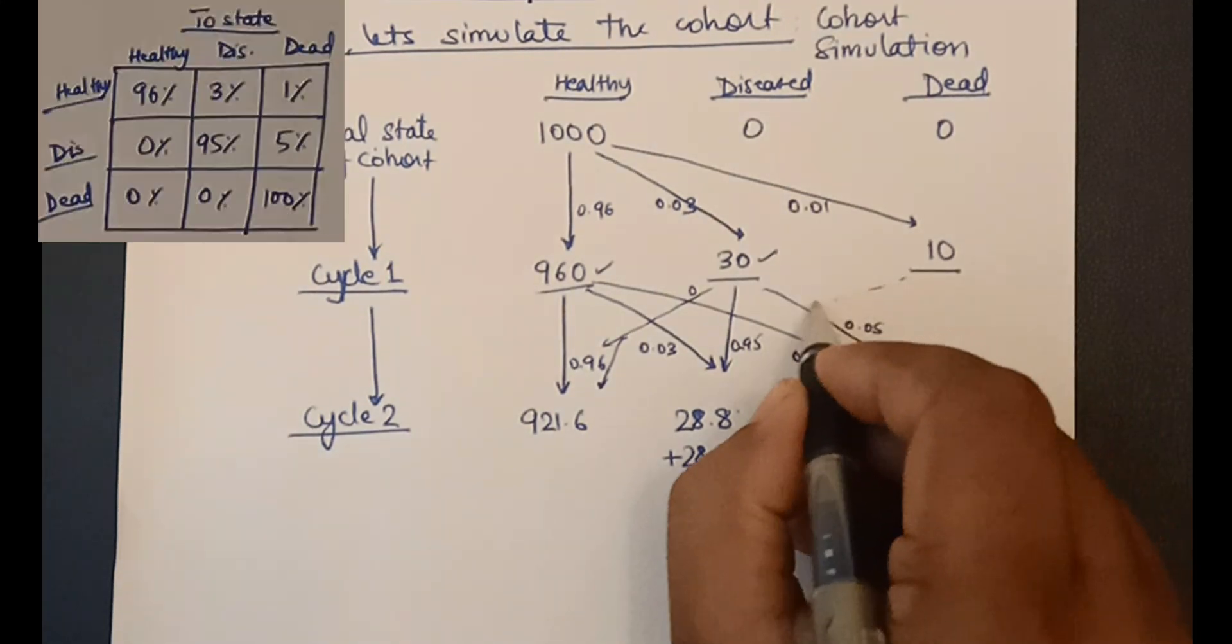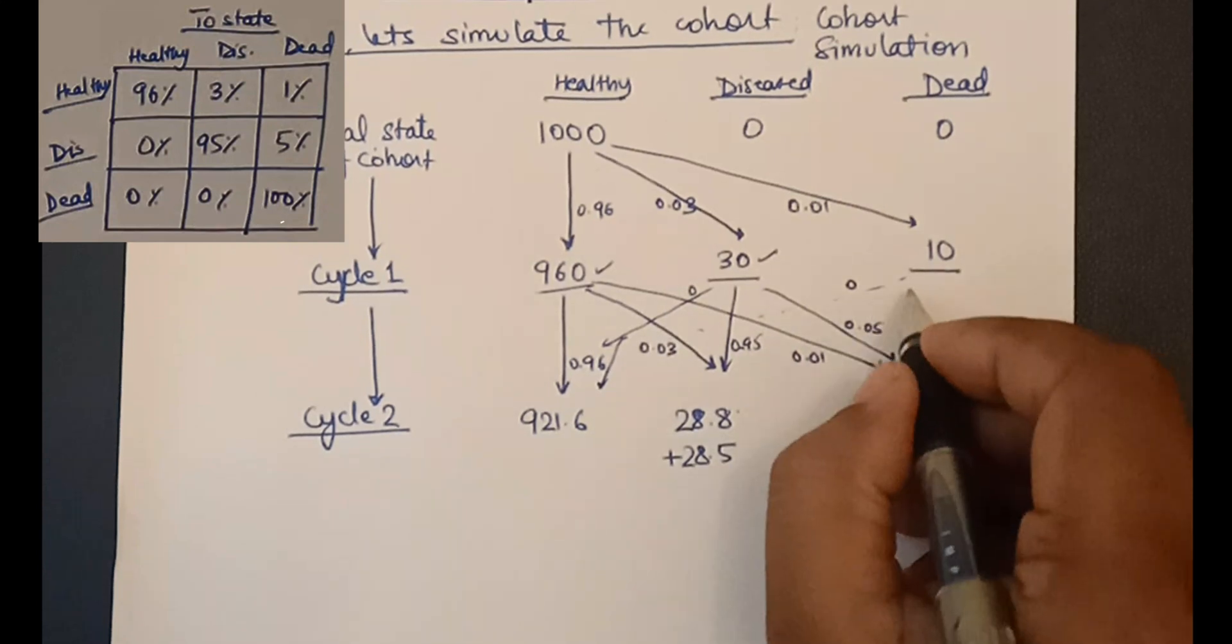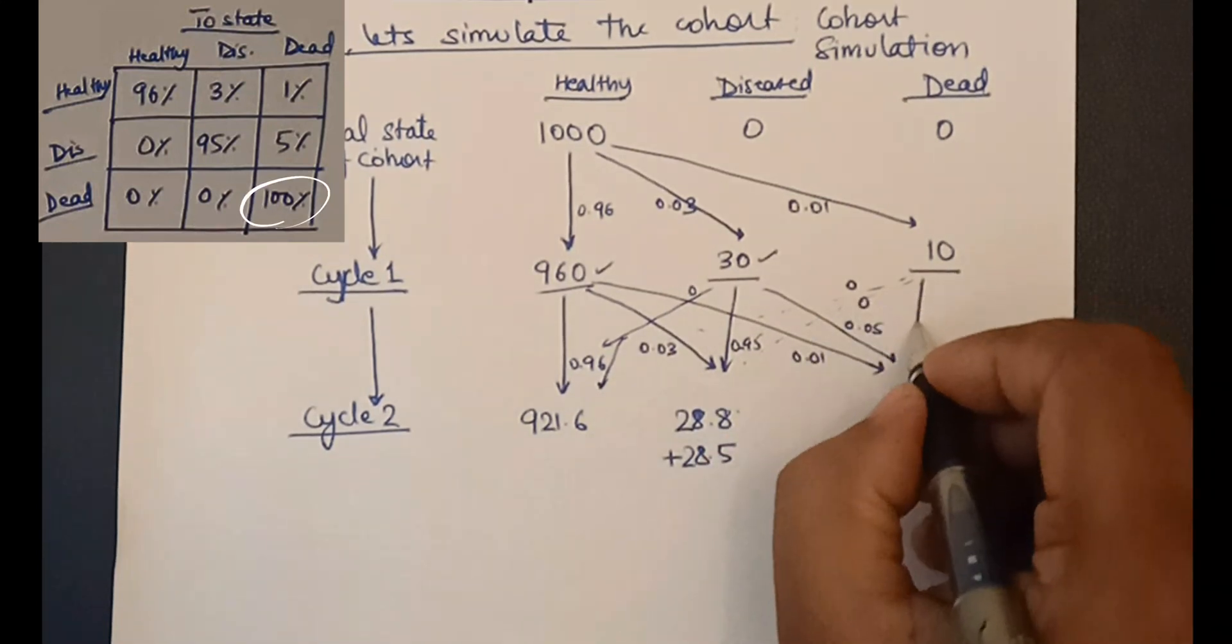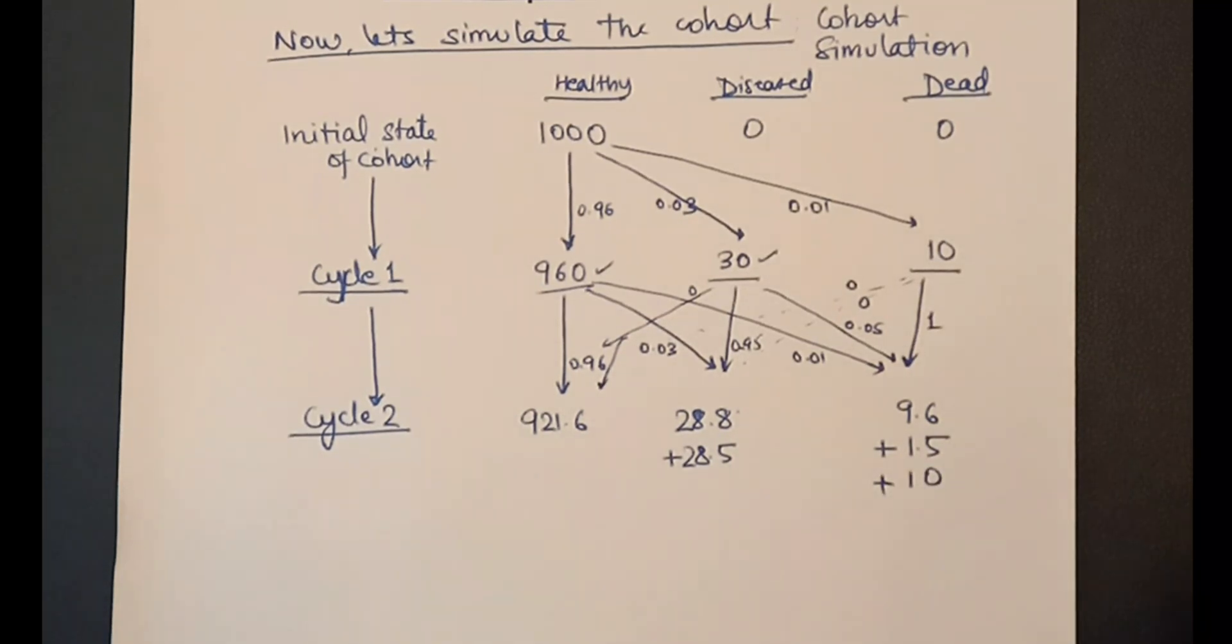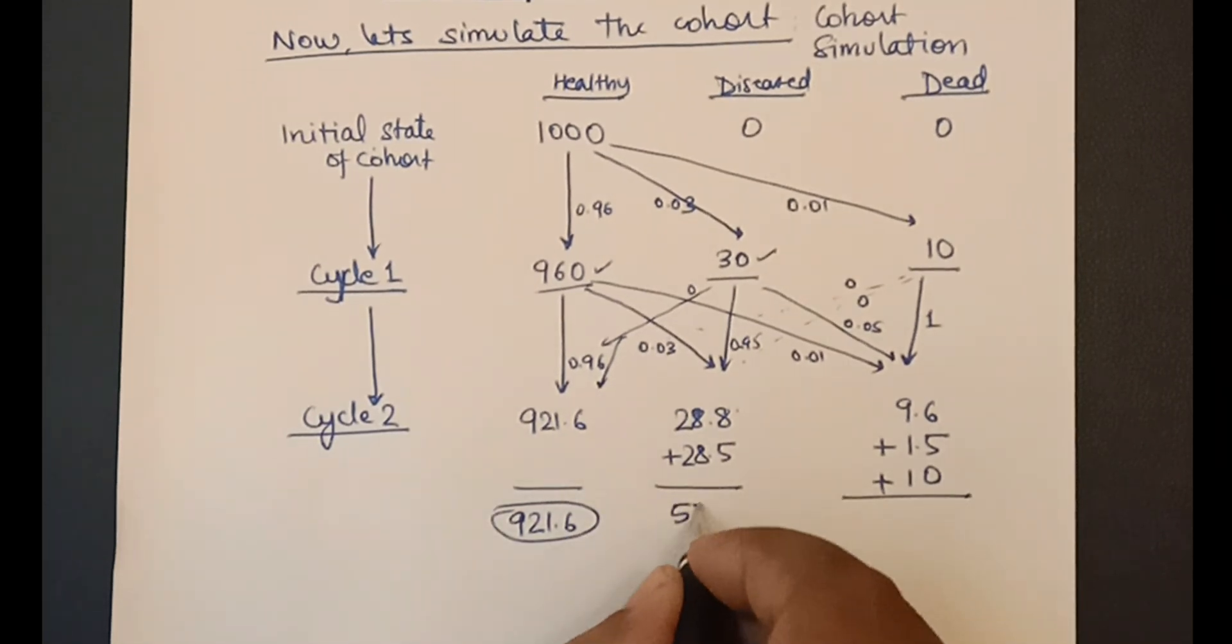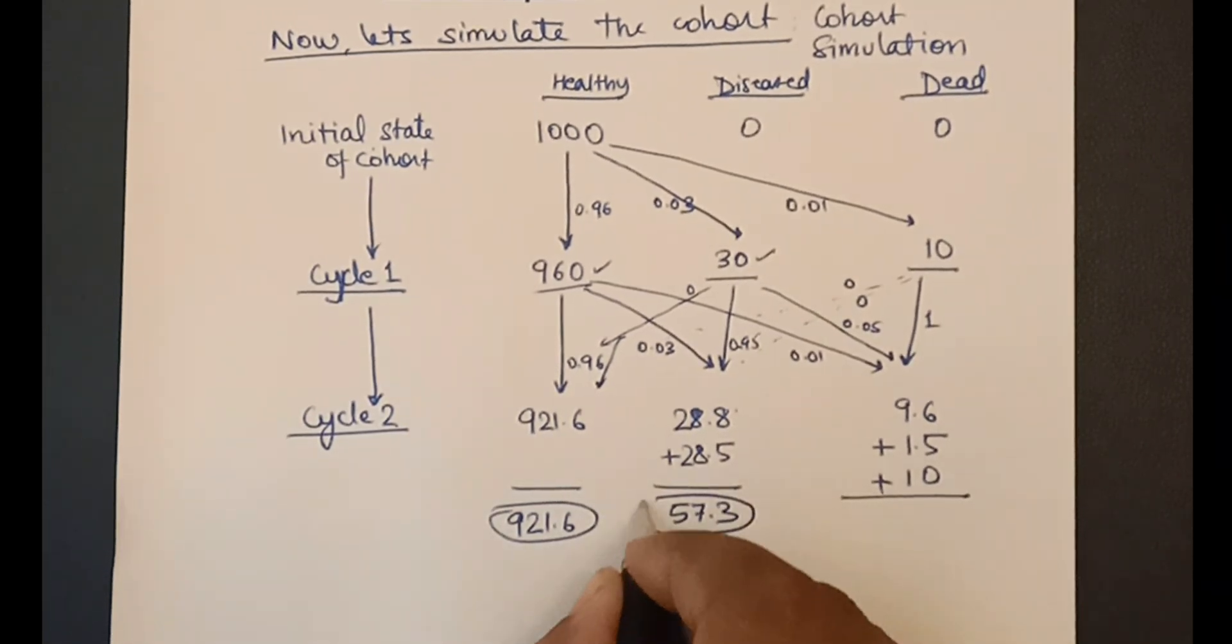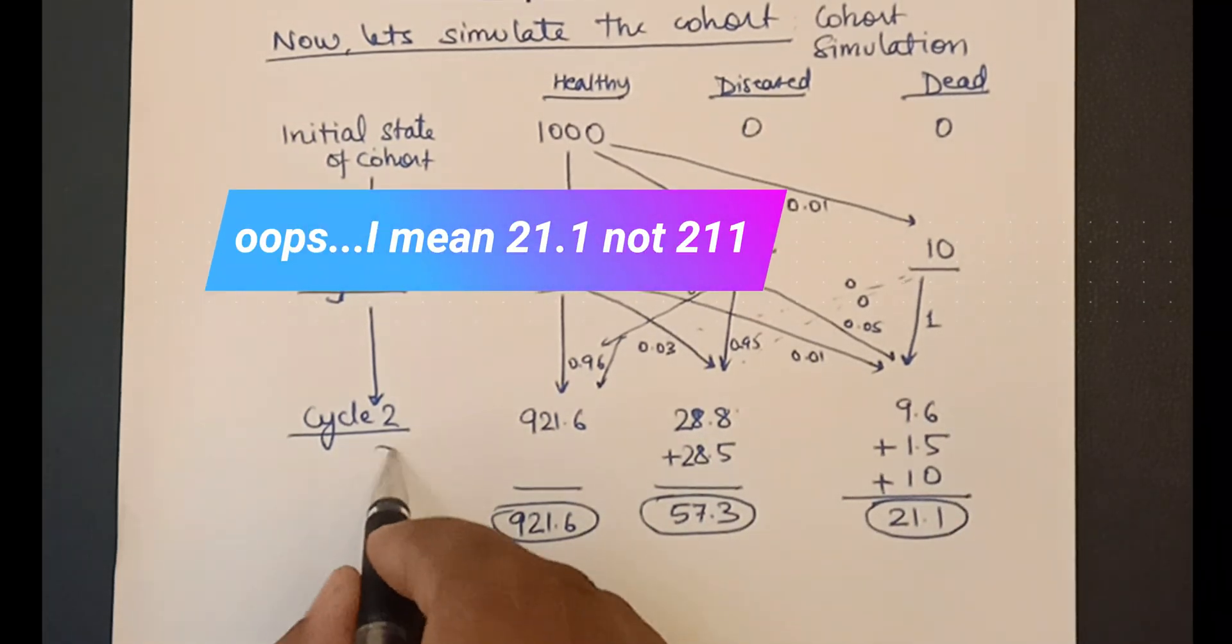Finally, in the dead group, there is 0 probability to go into healthy state or the diseased state. So no contributions here. 100% of the people remain in the dead state. Now, we add these to get 921.6 in the healthy state, 57.3 in the diseased state, and 21.1 in the dead state after cycle 2.